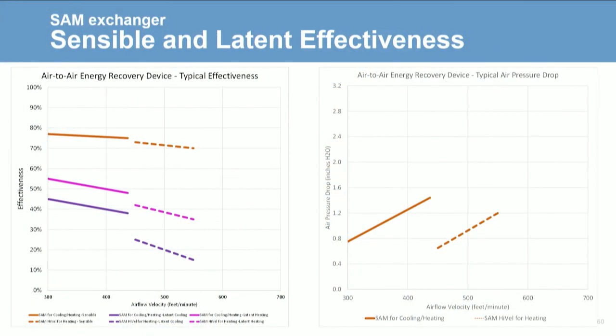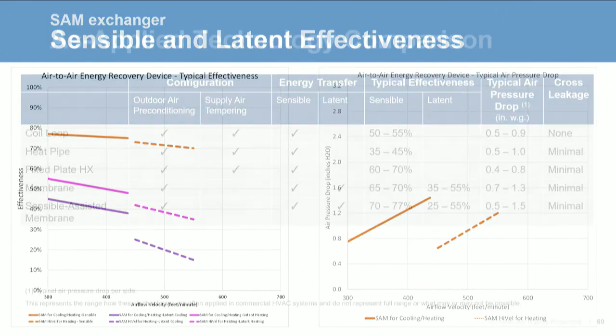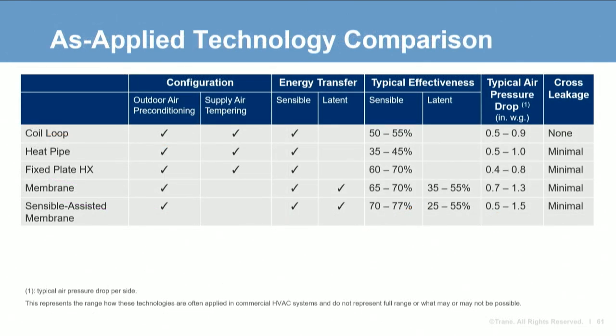As with metal plate exchangers, sensible effectiveness does not change much with face velocity, but face velocity does have a large impact on pressure drop. Summarizing in the table, SAM exchangers will have the highest as-applied sensible effectiveness, with latent effectiveness similar to membranes, or they can have similar sensible effectiveness to a metal fixed plate exchanger but still have some latent effectiveness.